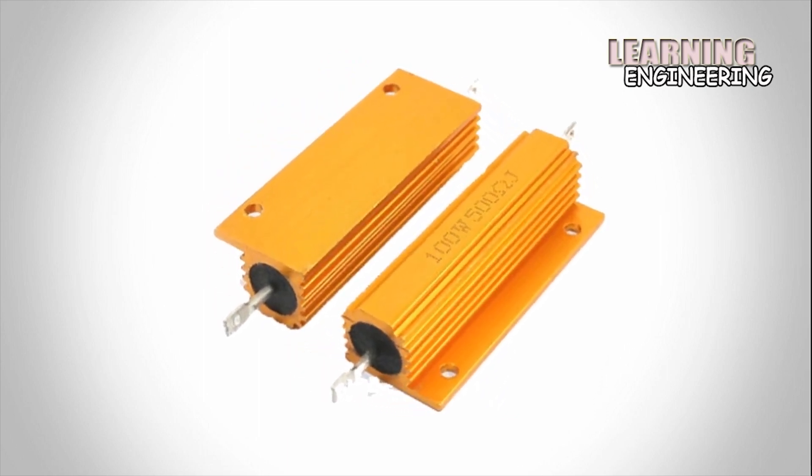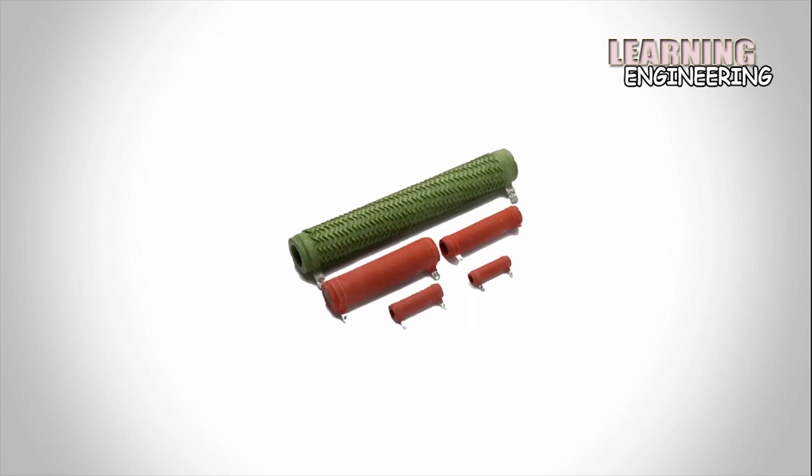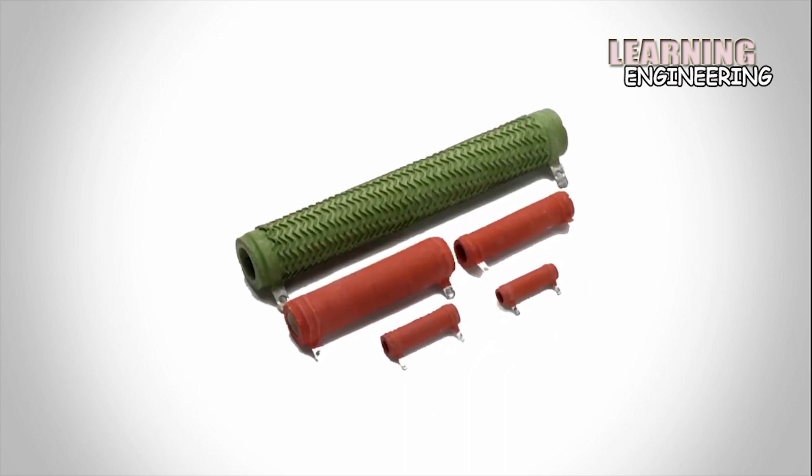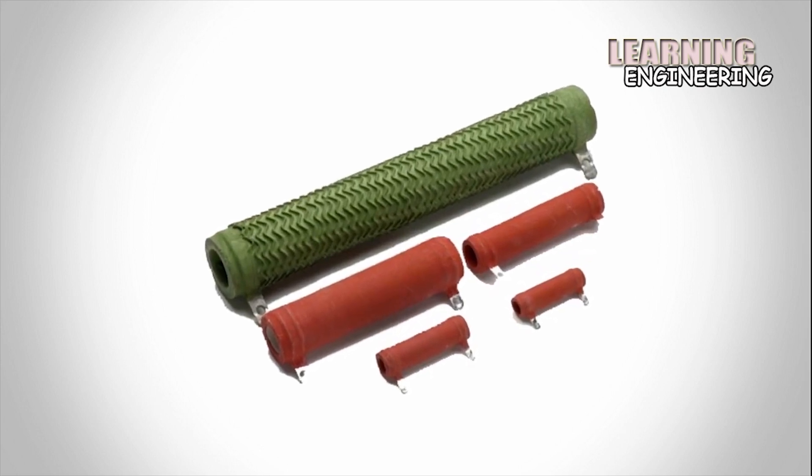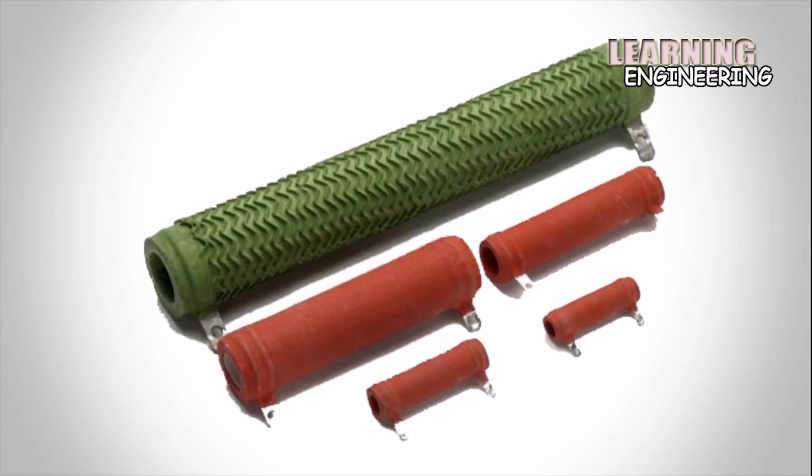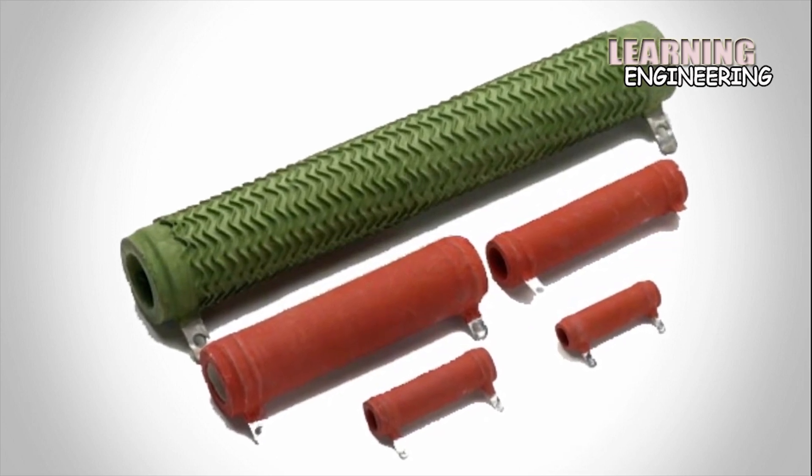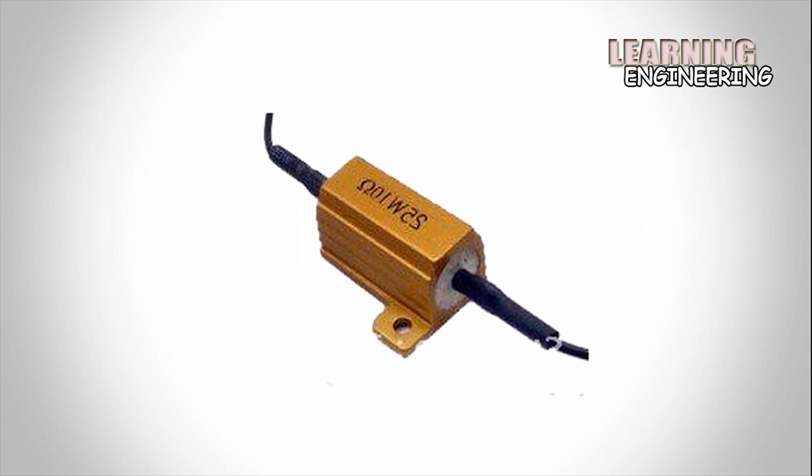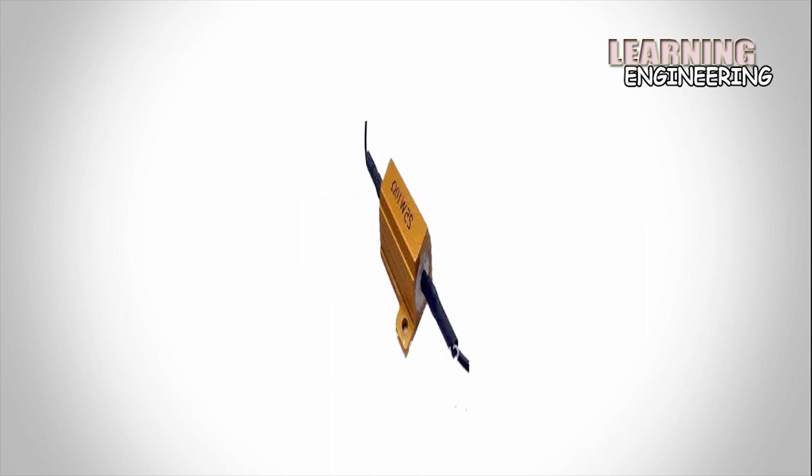High power resistors can dissipate many watts of electrical power as heat and may be used as part of motor controls, in power distribution systems, or as test loads for generators. Fixed resistors have resistances that only change slightly with temperature, time, or operating voltage.